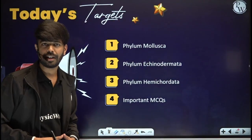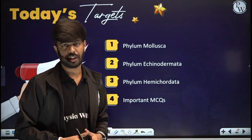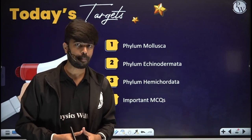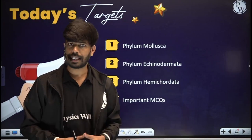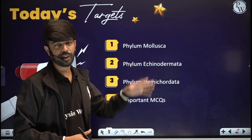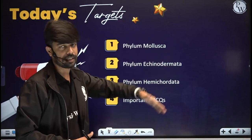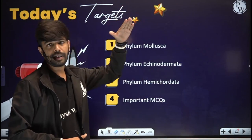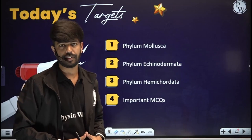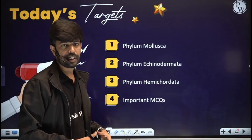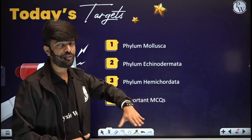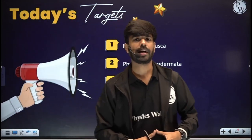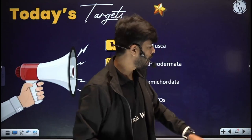Today we are going to discuss phylum Mollusca — its general and specific characteristics, examples — which are important for examination and KCET. We will also cover phylum Echinodermata and phylum Hemichordata. Previously, Hemichordata was kept under Chordata, but now it has been shifted to the invertebrates. Previous year questions have come from this topic.